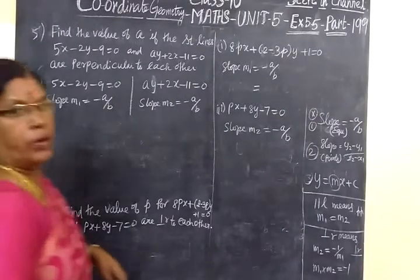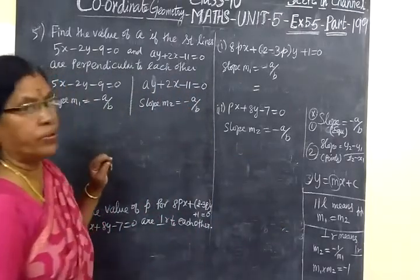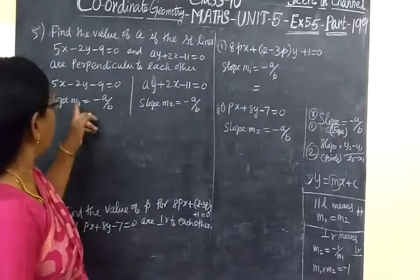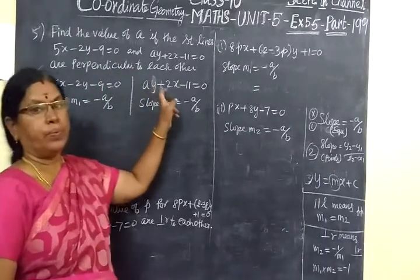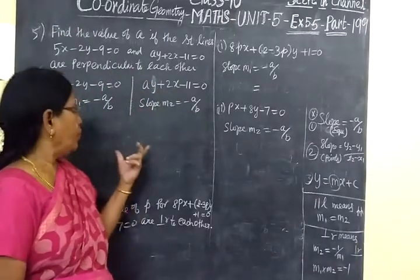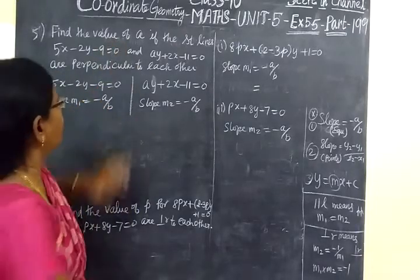Hello everyone. So in part 199, we are seeing problems 5 and 6. In problem 5, we are given 2 straight lines that are perpendicular to each other, and we want to find the value of A.